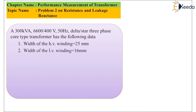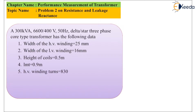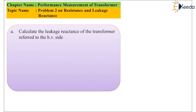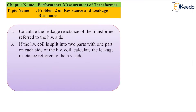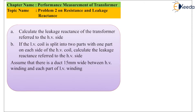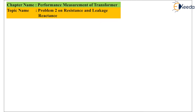The width of the HV winding is 25mm, width of the LV winding is 16mm, height of the coils is 0.5m, LMT (length mid-turn) is 0.9m, HV winding turns are 830, and the width of the duct between HV and LV winding is 15mm. Calculate the leakage reactance referred to the HV side. Then, if the LV coil is split into two parts with one part on each side of the HV coil, calculate the leakage reactance referred to the HV winding, assuming a duct 15mm wide between the HV winding and each part of the LV winding.